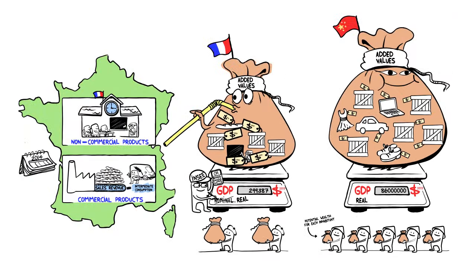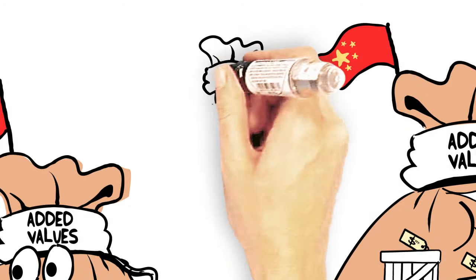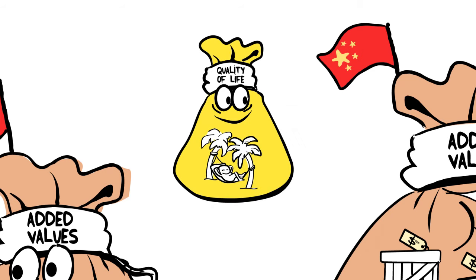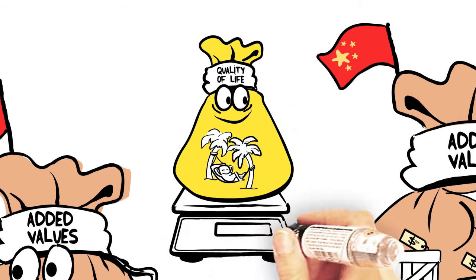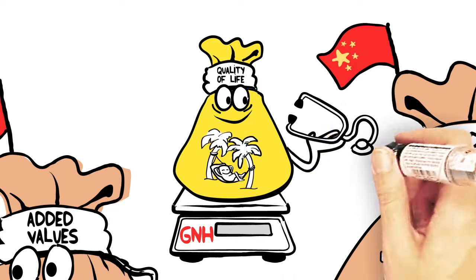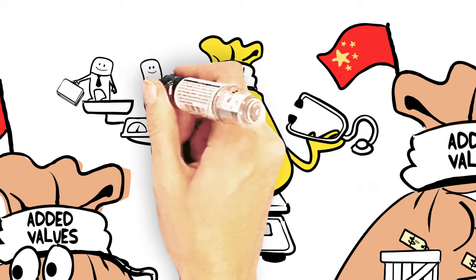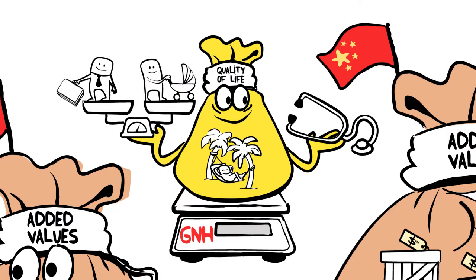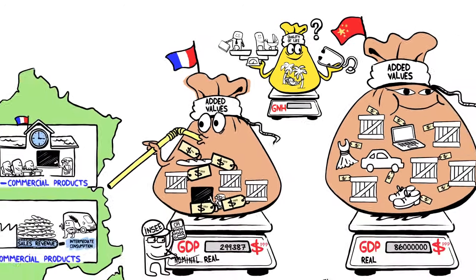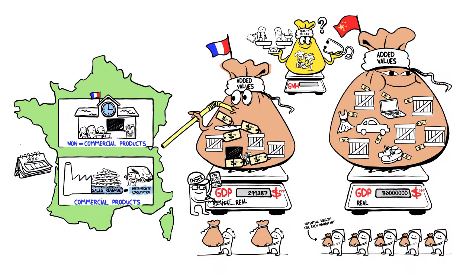However, a country's wealth is not necessarily limited to its production. It may also take into account the quality of life experienced in that country. Other indicators, such as gross national happiness, GNH, factor in health or work-life balance, for example. These new criteria are still difficult to measure, but they do offer a new option when considering how we view the economy.